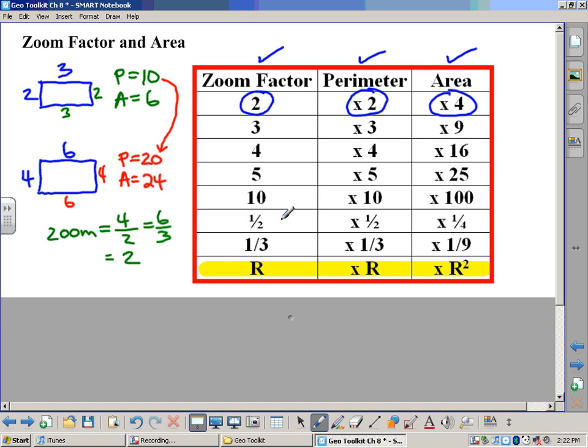And so what happens is if you were to do more and more figures like this, you'd start noticing that the zoom factor is three. Hey, perimeter is three times as much, but the area is nine times as much. So this number comes from taking the zoom factor and squaring it. So all of these areas here are the zoom factor squared. So it multiplies not by whatever that zoom factor is, but by that zoom factor squared, and that's what's shown down here. R, if the R is the zoom factor, then you multiply the perimeter by R to get the perimeter, but you multiply by R squared to get your area.